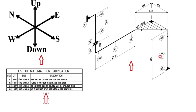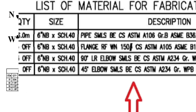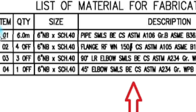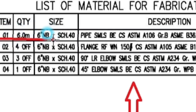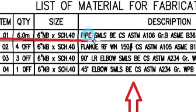Detail number 1 was used in several places in the pipe drawing. Looking at the material list, detail number 1 has a quantity of 6 meters of 6-inch schedule 40 pipe. The material is carbon steel.